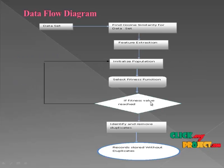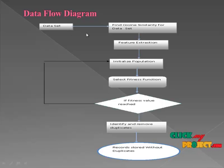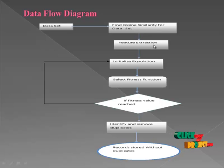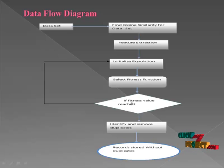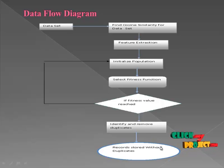This is the complete flow of the genetic programming approach. The input is a dataset; for that dataset, cosine similarity between attributes is calculated. Based on that cosine similarity, feature vectors are extracted with the highest cosine similarity. These feature vectors are considered as the populations. Using the populations, we form the fitness function. If the fitness function reaches the fitness value, then that is the best deduplication function and we can remove duplicates using it.